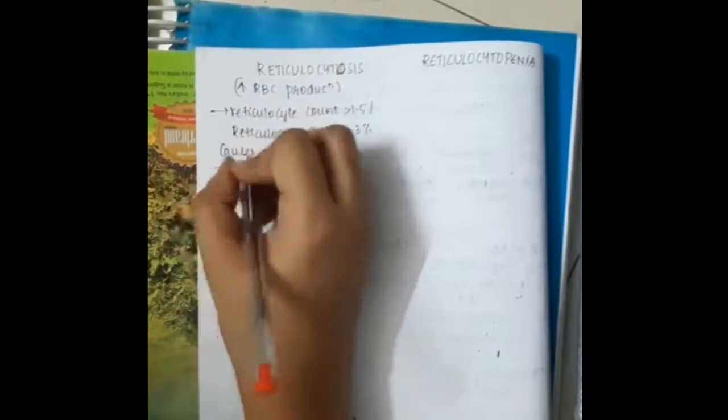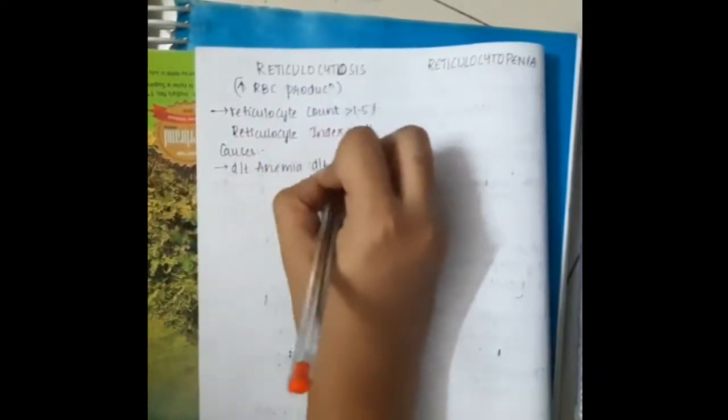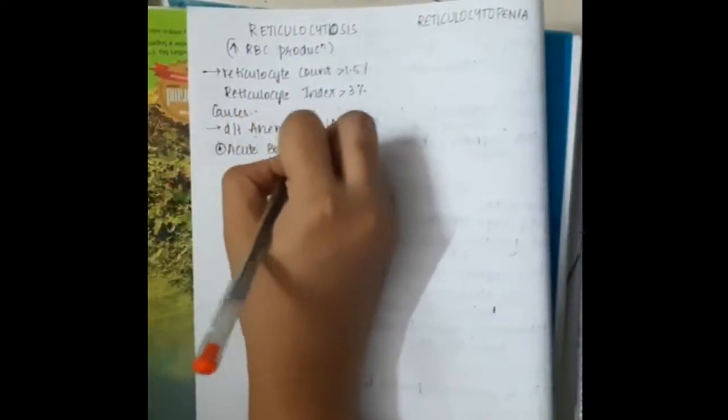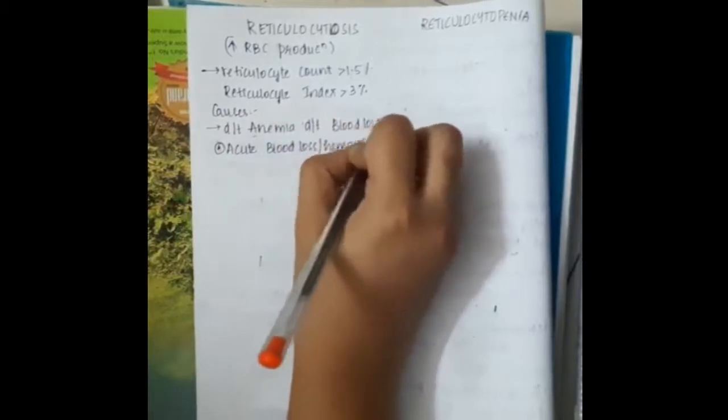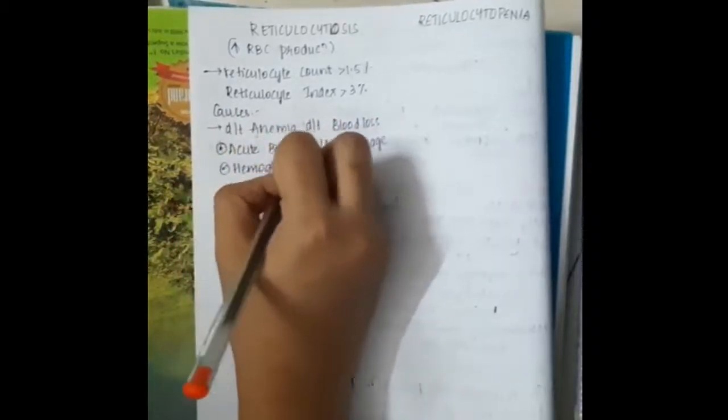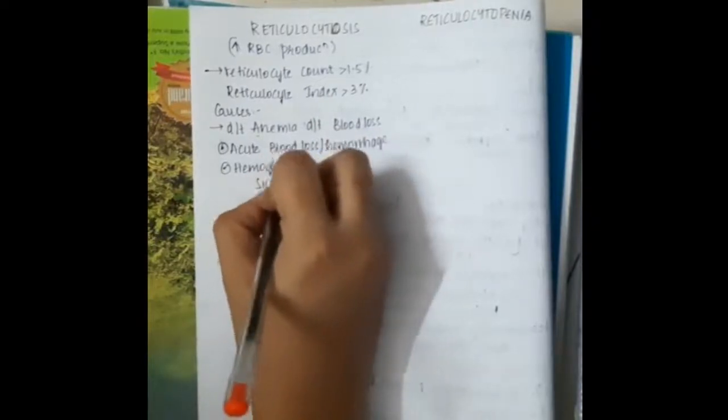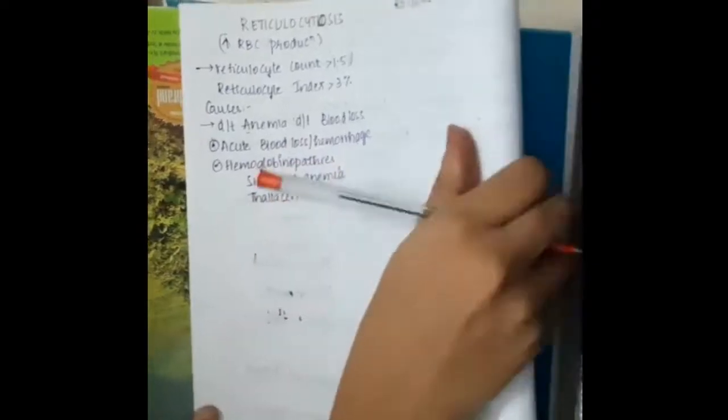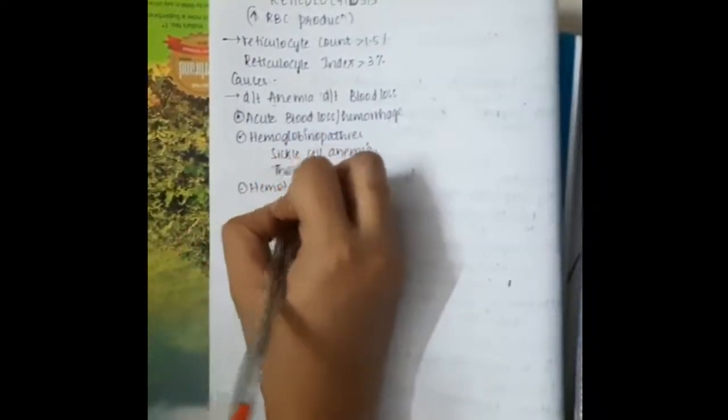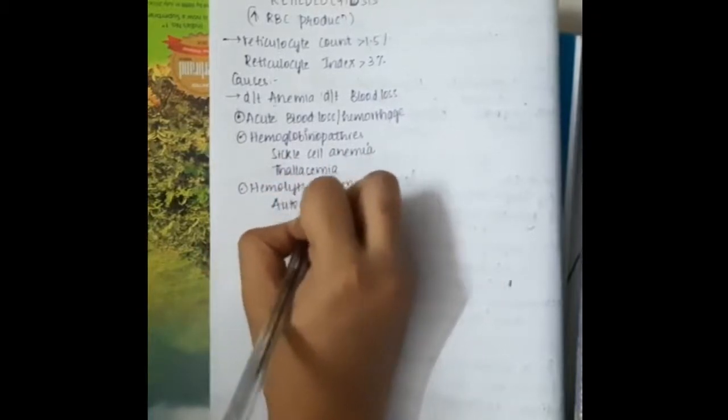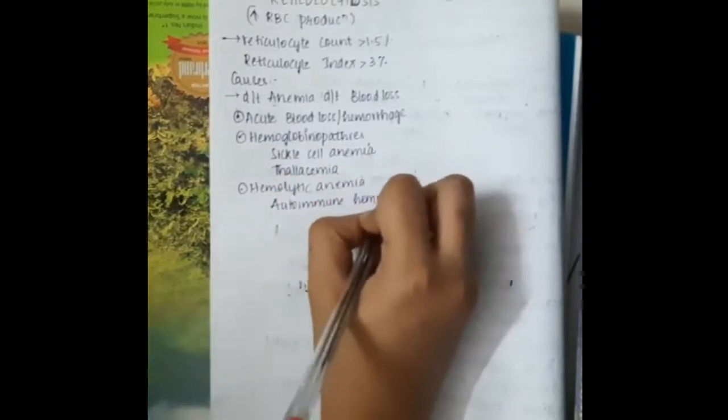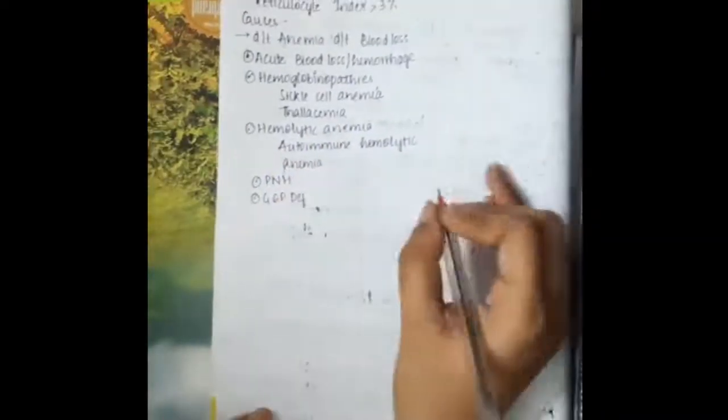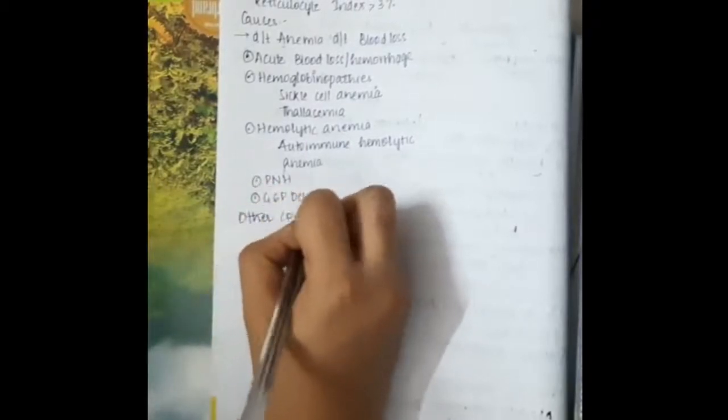The causes of reticulocytosis are anemia due to blood loss like acute blood loss or hemorrhage, hemoglobinopathies like sickle cell anemia and thalassemia where hemolysis of RBC occurs fast due to abnormal shaped RBCs, and hemolytic anemia including autoimmune hemolytic anemia, paroxysmal nocturnal hemoglobinuria, and glucose-6-phosphate dehydrogenase deficiency.